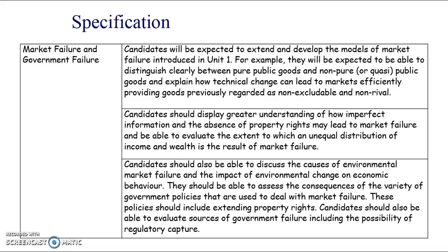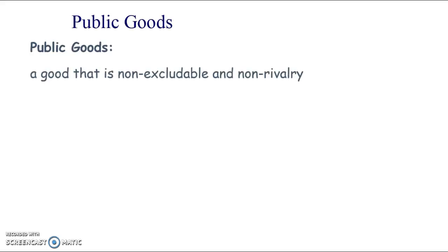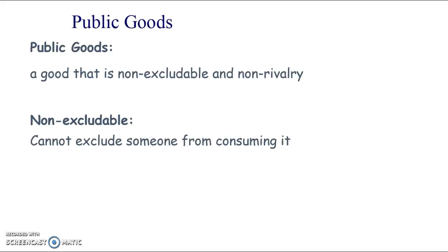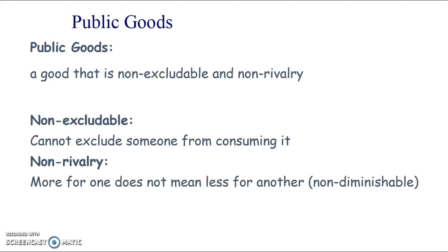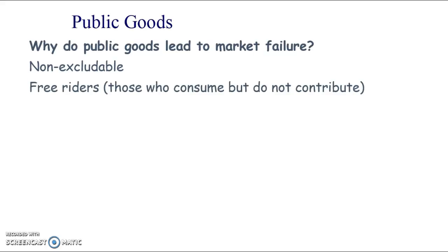We're going to go into a little bit more detail on a few concepts. Public goods is one of those — you probably remember that public goods are goods that are non-excludable and non-rivalry. Non-excludable means you can't exclude someone from consuming it, and non-rivalry means more for one person doesn't mean less for another person — sometimes called non-diminishable. It sounds great, but why does it lead to market failure?